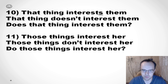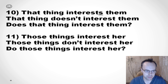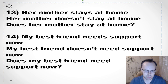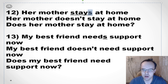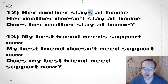'Those things interest her. Those things don't interest her. Do those things interest her?' Number 11: 'Her mother stays at home' — her mother means she, so stays. 'Her mother doesn't stay at home. Does her mother stay at home?' 'My best friend needs support now' — he or she, so we use S. 'My best friend needs support now. My best friend doesn't need support now. Does my best friend need support now?'